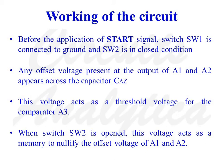Now let us consider the working of the circuit. Before the application of the start signal, switch SW1 is connected to ground and switch SW2 is in the closed condition. Any offset voltage present at the output of A1 and A2 appears across the capacitor CAZ, since switch SW2 is in the closed condition. This voltage across the capacitance acts as a threshold voltage for comparator A3.